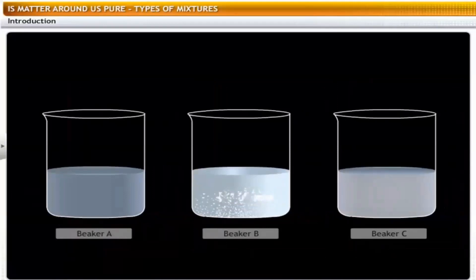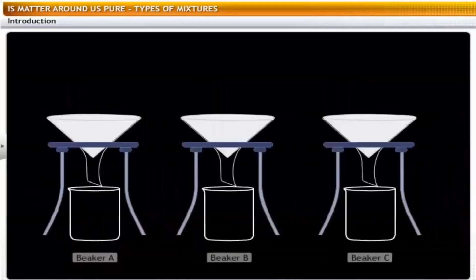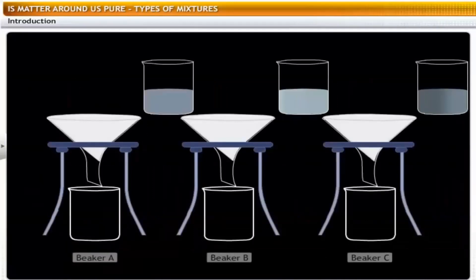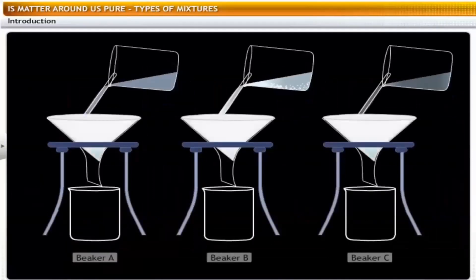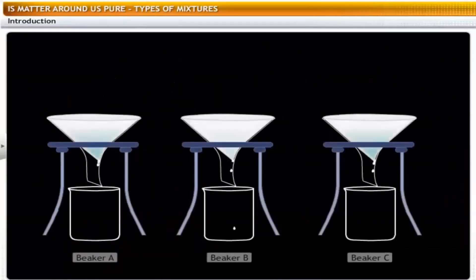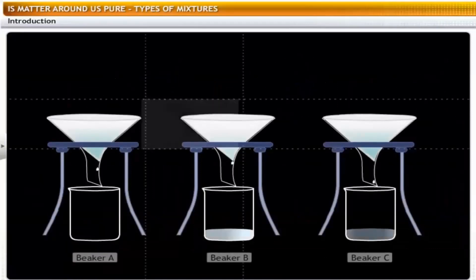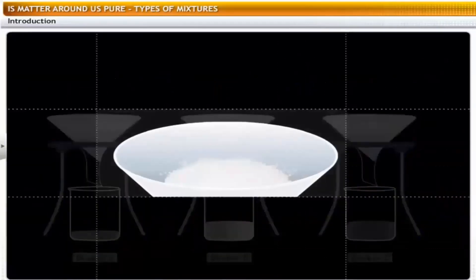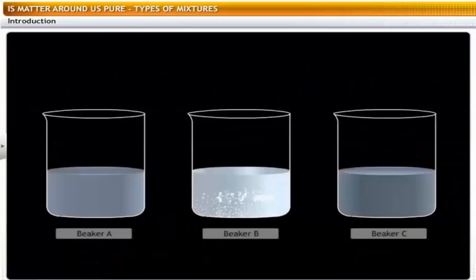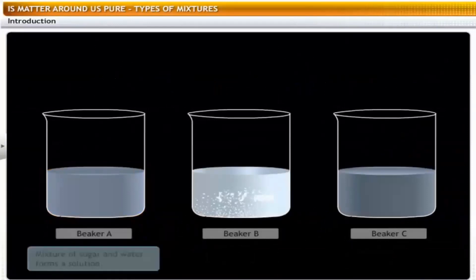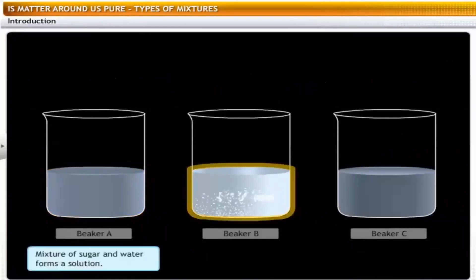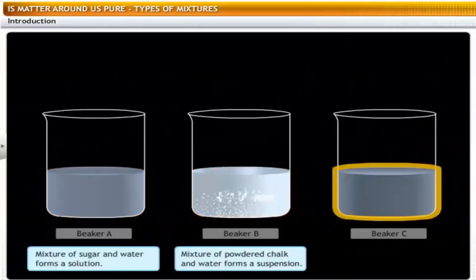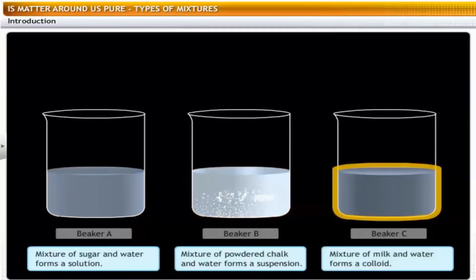Leave the mixtures undisturbed for some time, then filter each mixture. You will find a residue on the filter paper for beaker B. The mixtures in the beakers are of three distinct types: the mixture in A is a solution, in B is a suspension, and in C is a colloid.